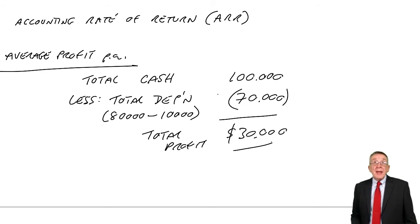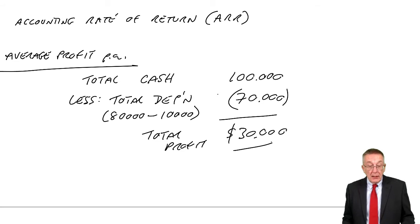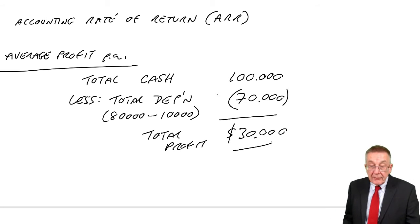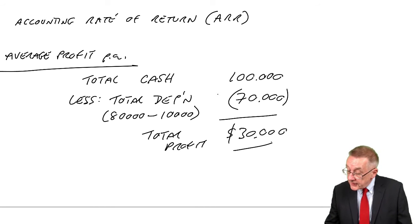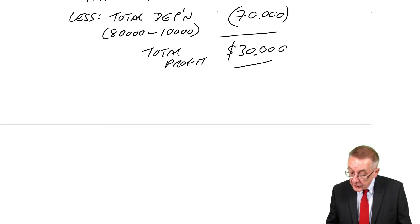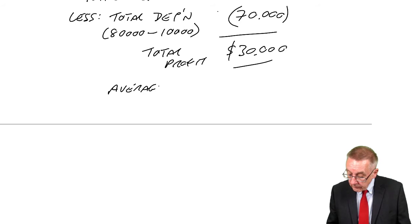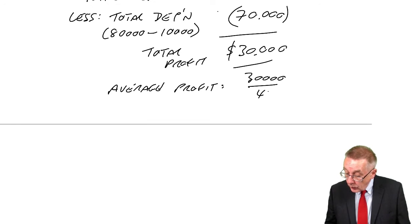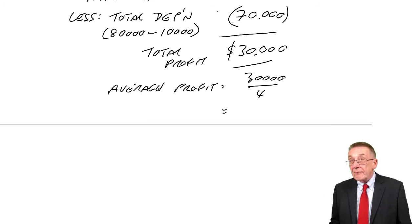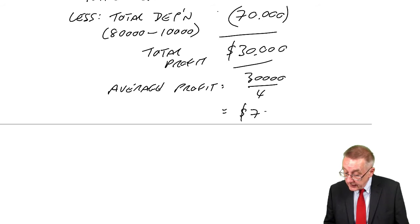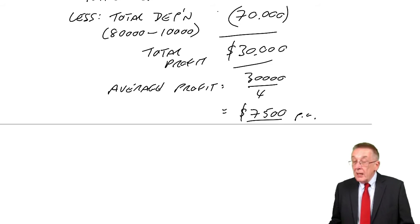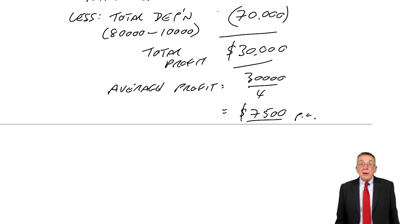We want the average profit per year. It's lasting four years, so the average profit is 30,000 divided by 4, which is 7,500. So there's our average profit.